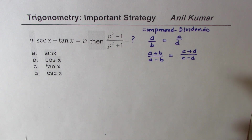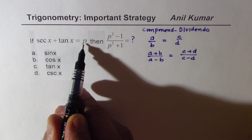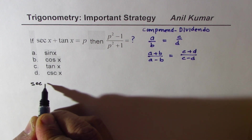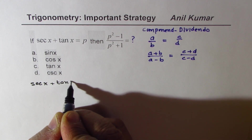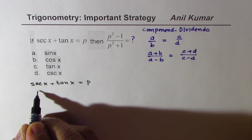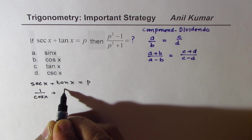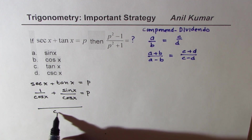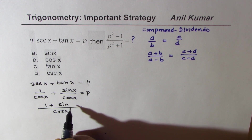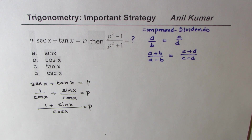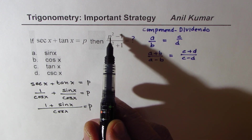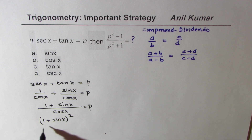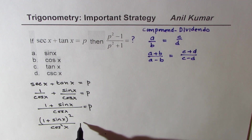Now let's see how to solve the given question. If secant x plus tan x equals to p, then we need to find what is p squared minus 1 divided by p squared plus 1. Let's begin with secant x plus tan x and write it in the form of sin over cos. Secant is 1 over cos, and tan is sin x over cos x. That gives us cos x as common denominator and 1 plus sin x as numerator, equal to p. We want p squared, so let's square both sides, giving us 1 plus sin x whole squared over cos squared x equals p squared.